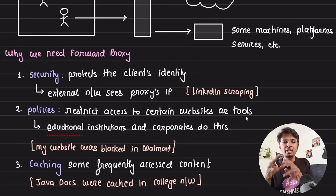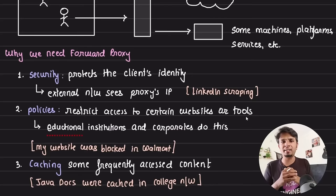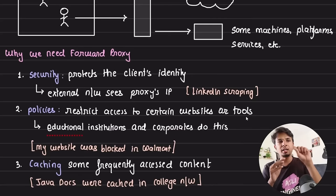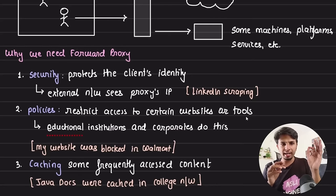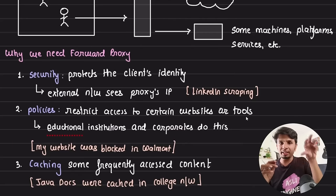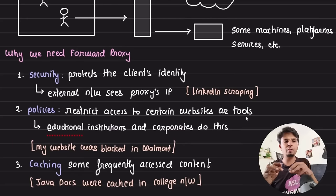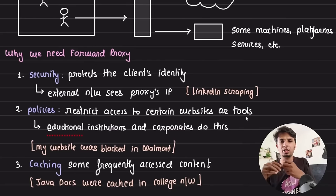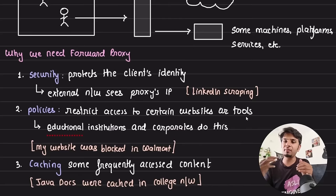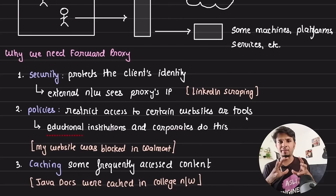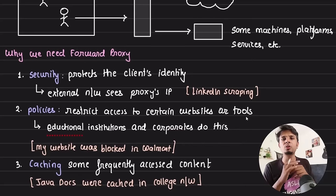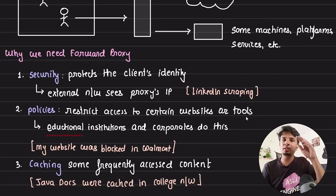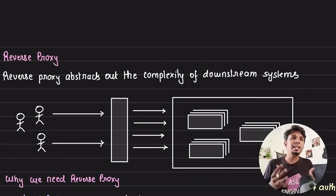A third reason is caching. Because everything passes through the common proxy, frequently accessed content can be cached there. For example, at my college around 2008–2012, we coded in Java and constantly referred to the Java docs. The Java docs were cached on the college proxy, so even when the internet was down, we could still access them — and they loaded very quickly.